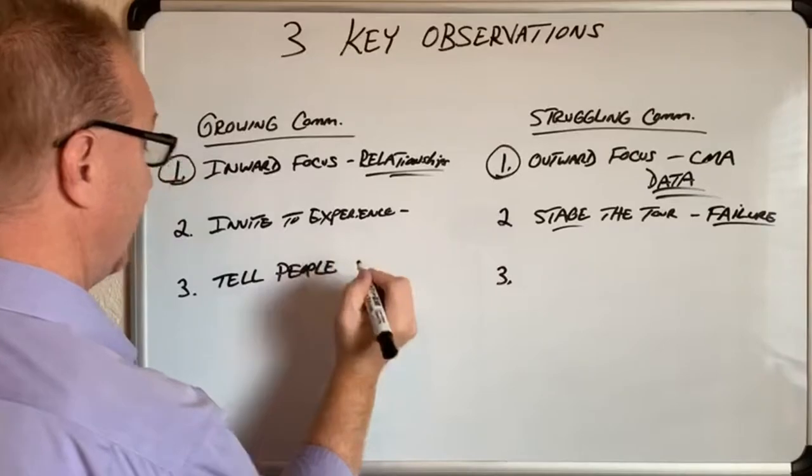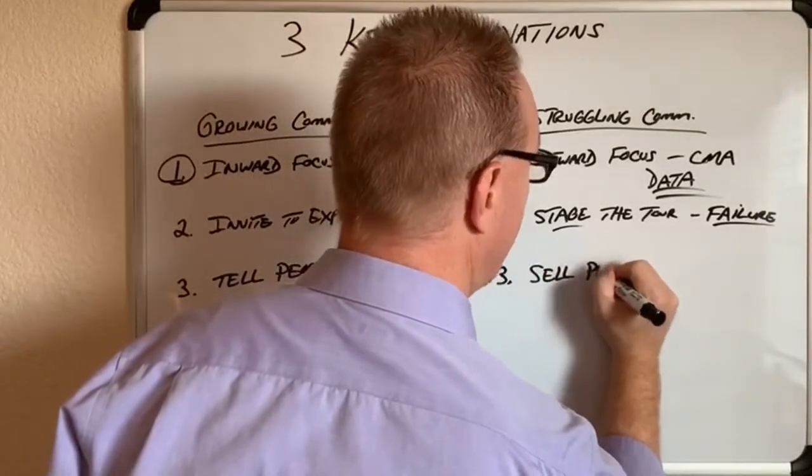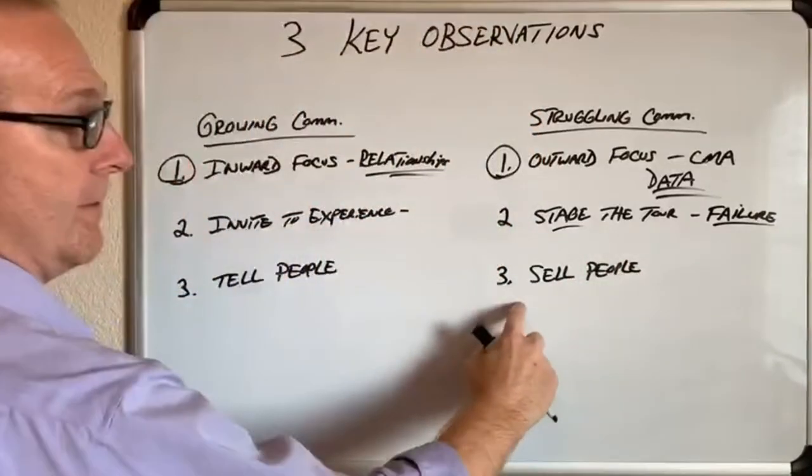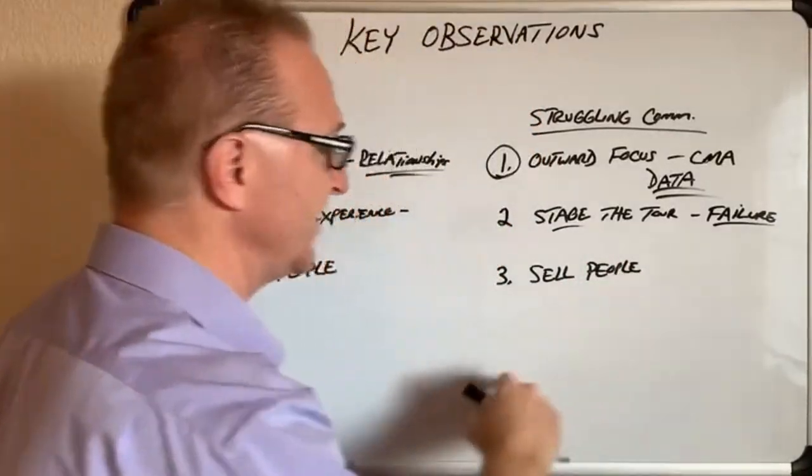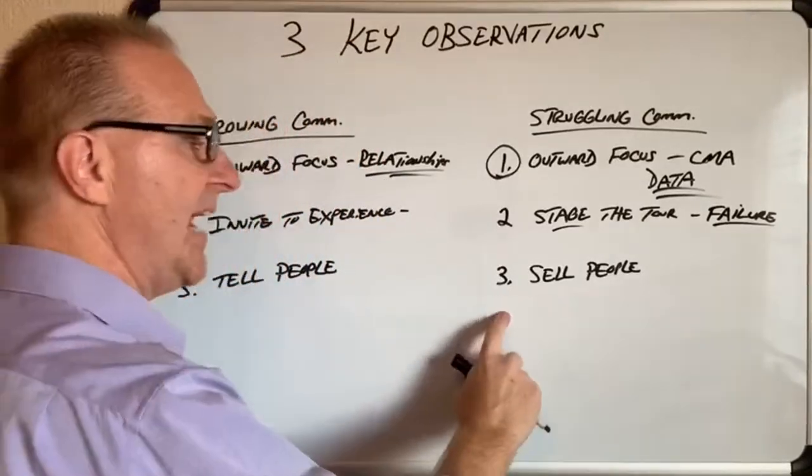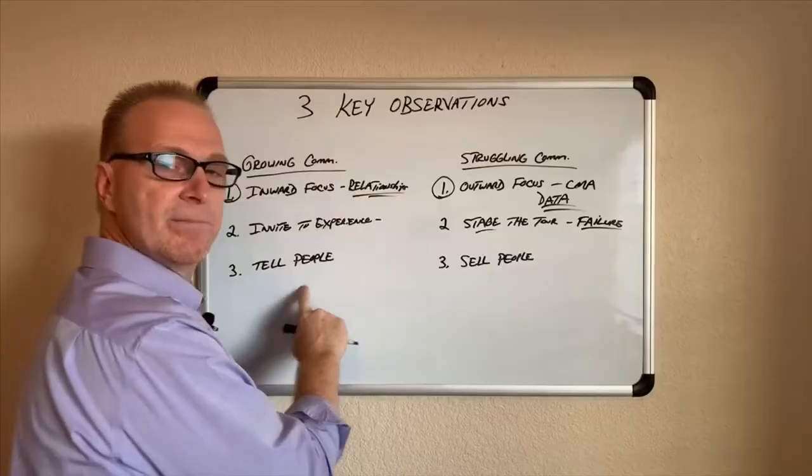Over here, they have to sell people what's going on. They have to sell they have big one-bedroom apartments. They have to sell that they have happy hour every Thursday night. They have to sell all these things. Over here in the growing community, they just tell.